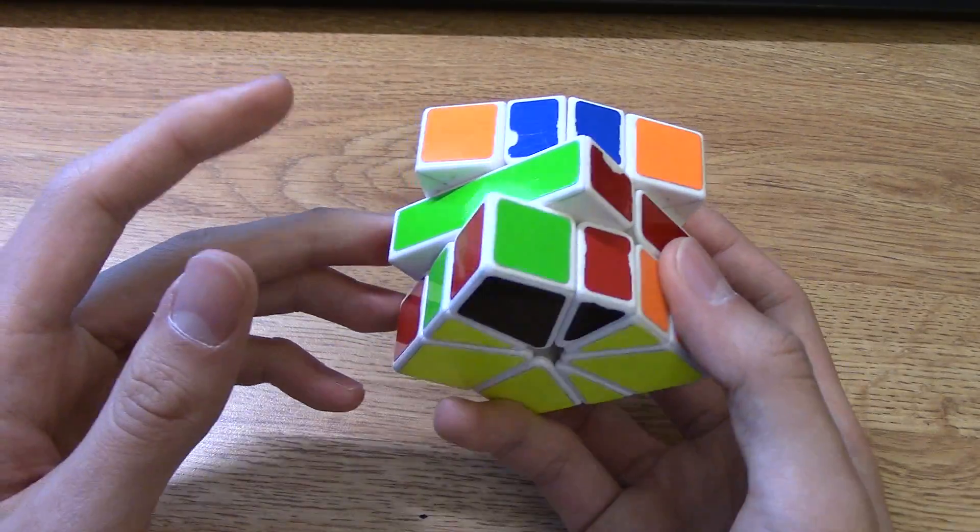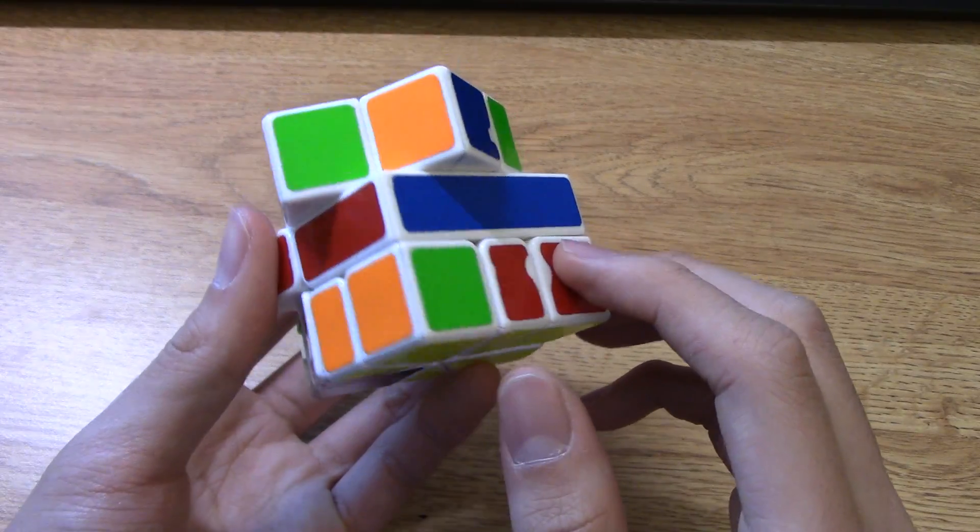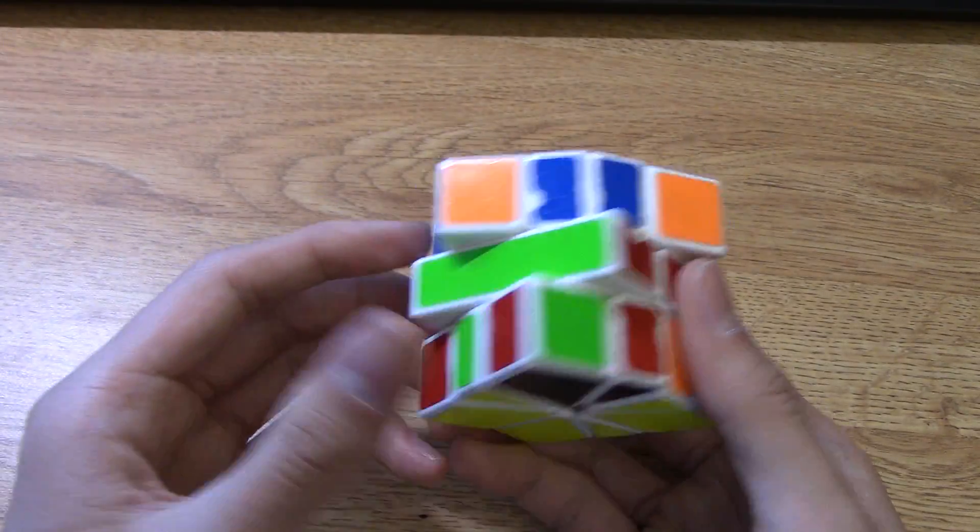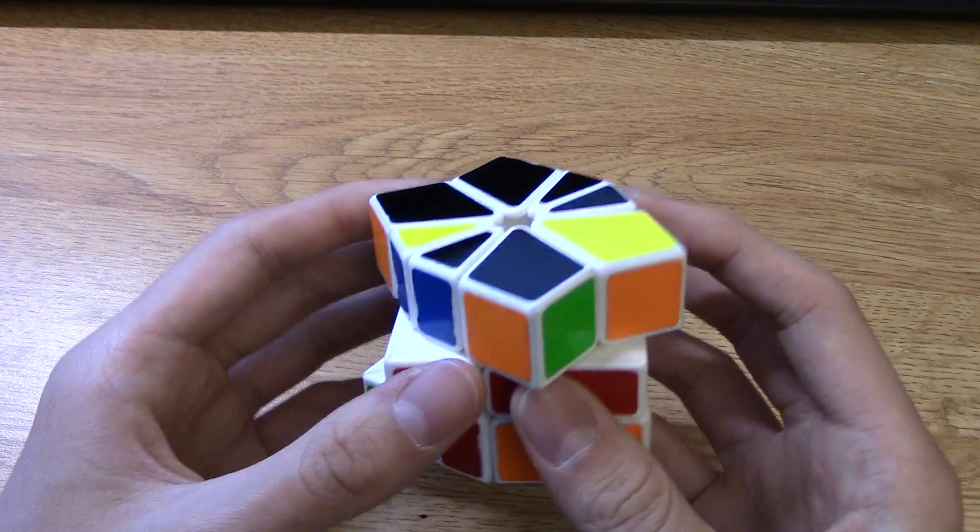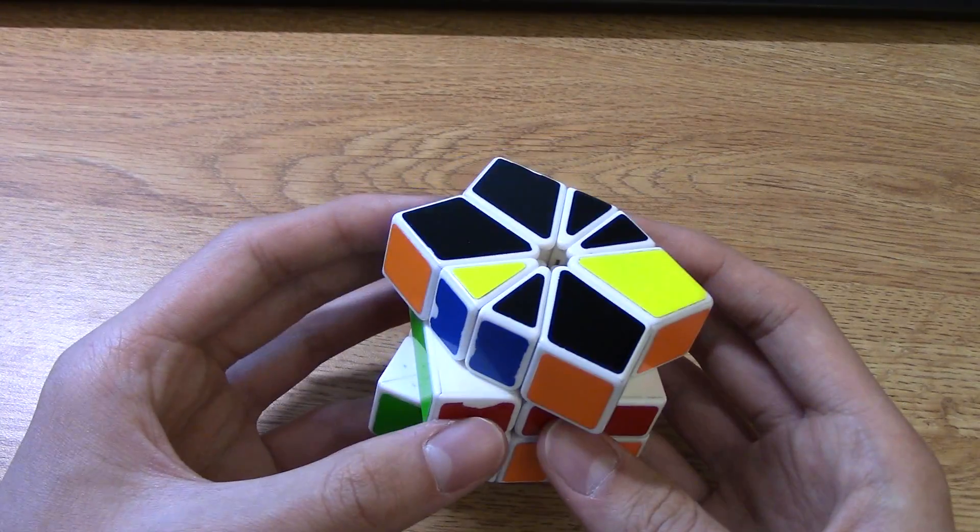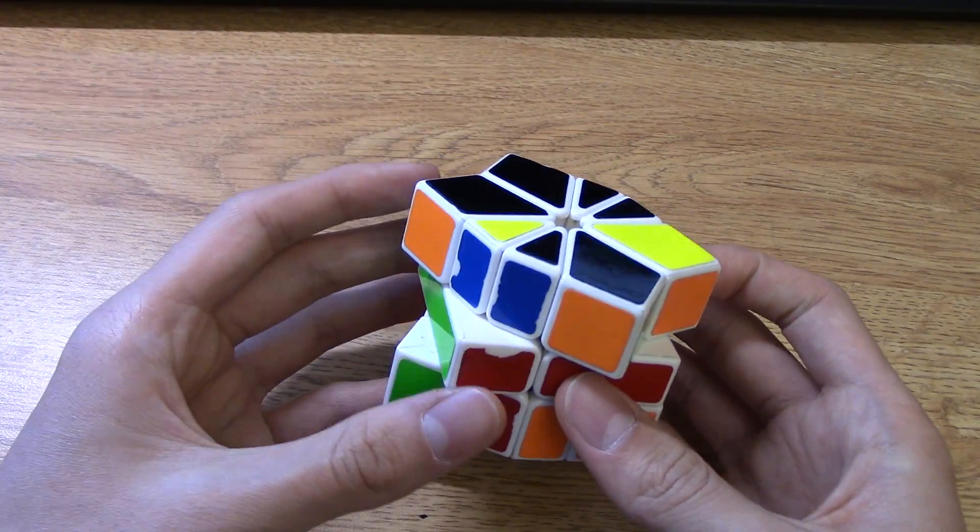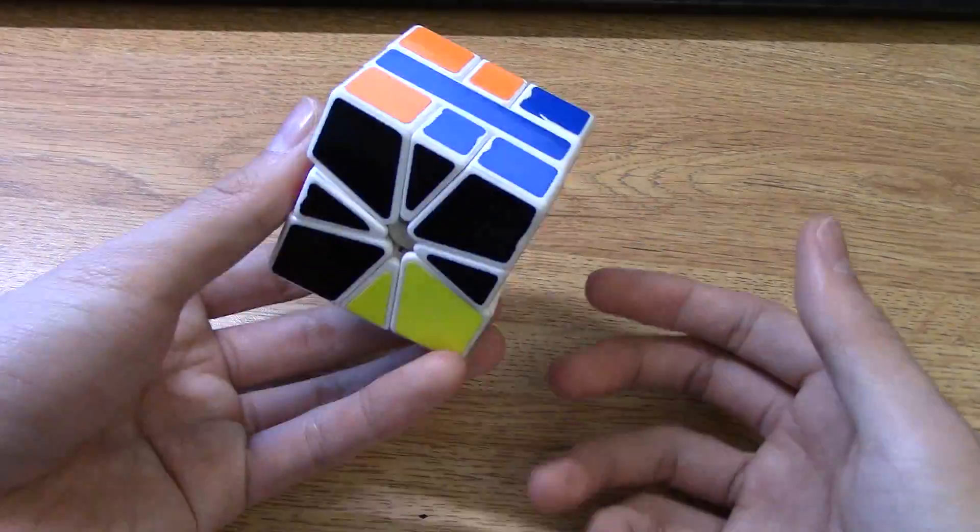So starting with this, 6, 7, 8, 9, no, 9, 10. 10, 10, so I have even parity. So I would just do barrel kite the normal way, like that.